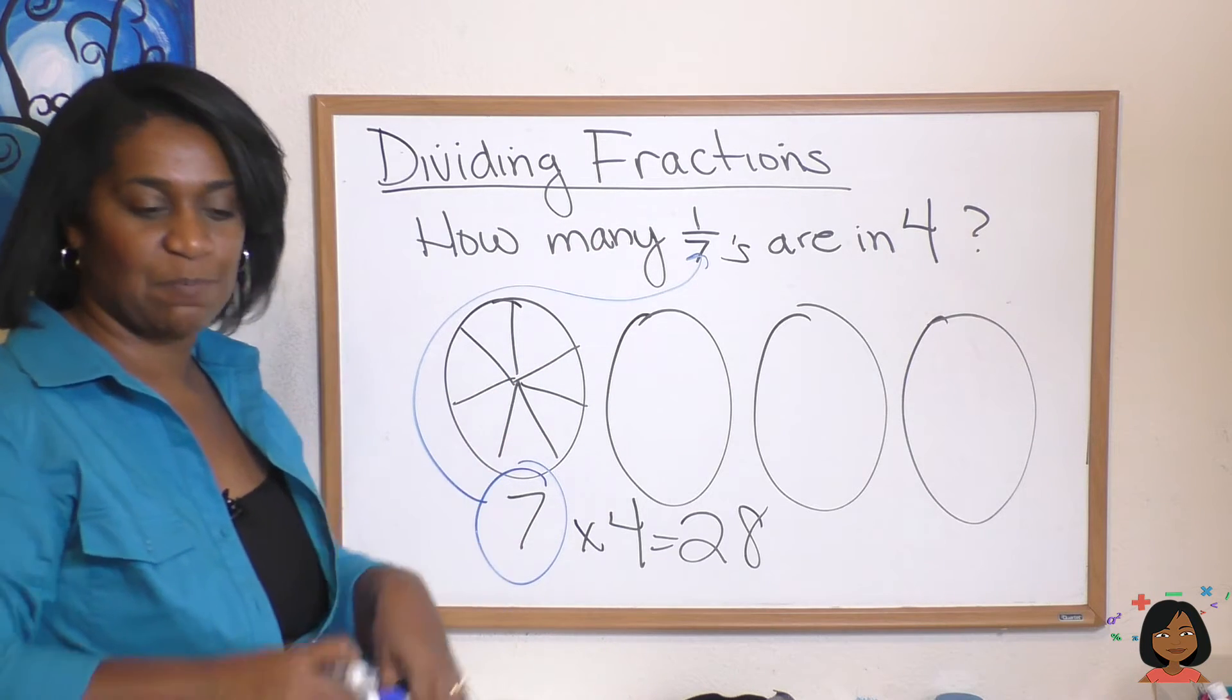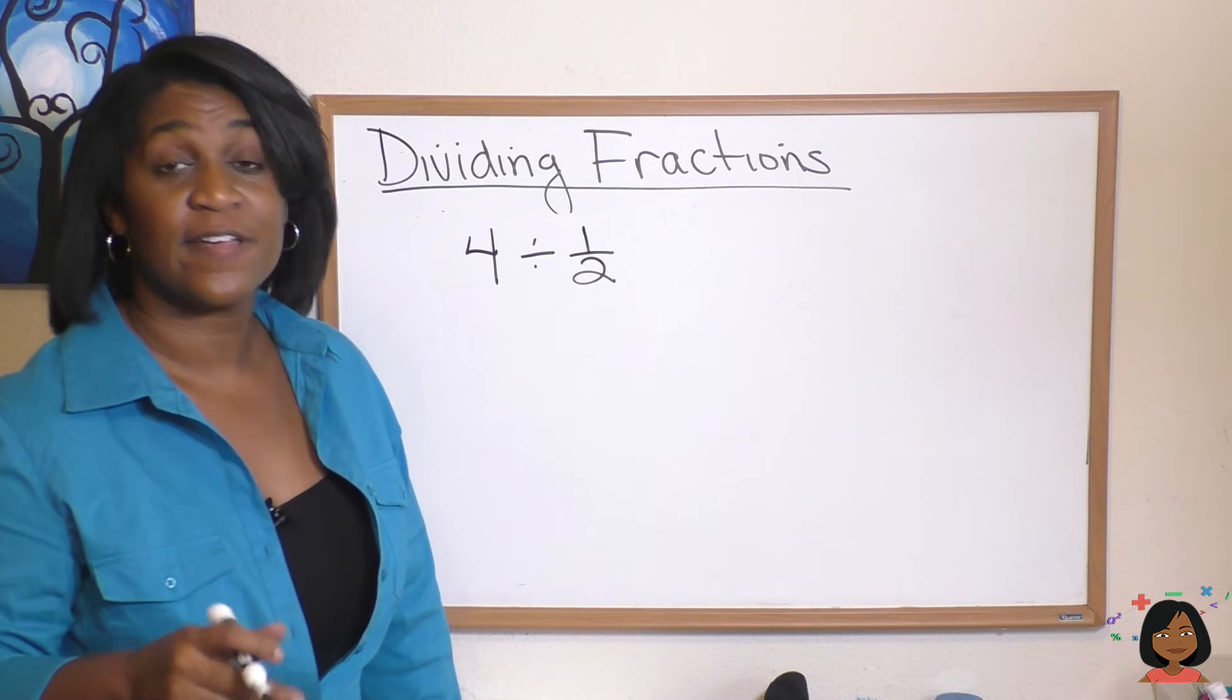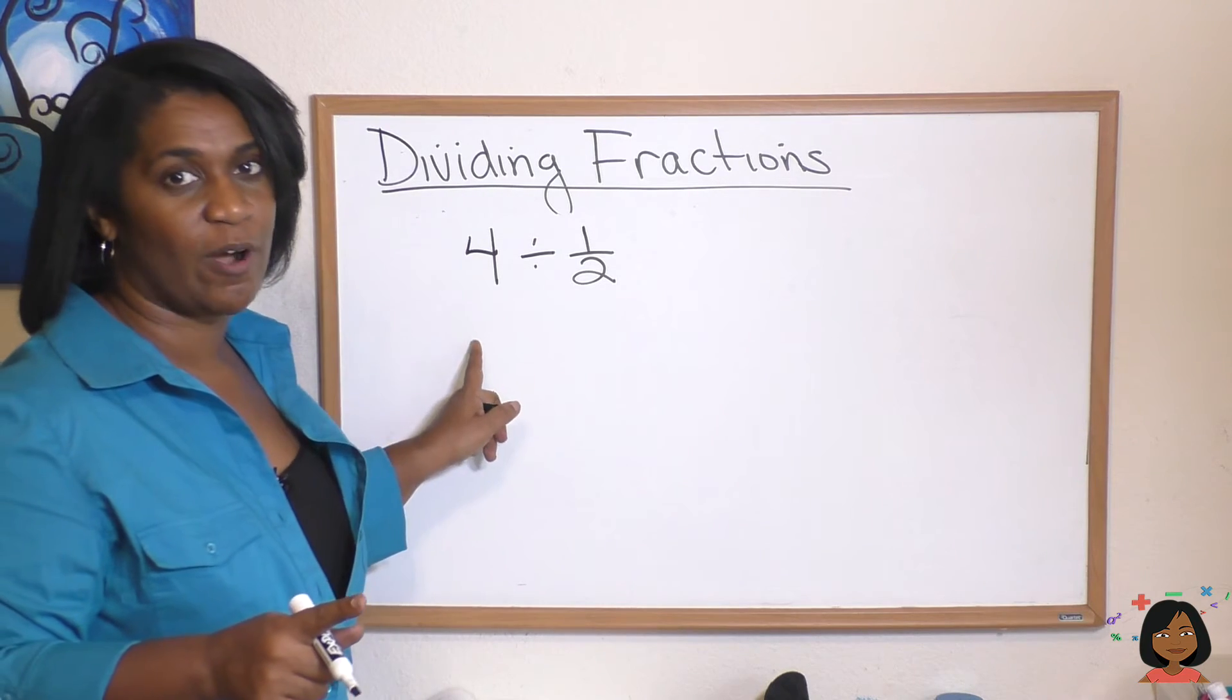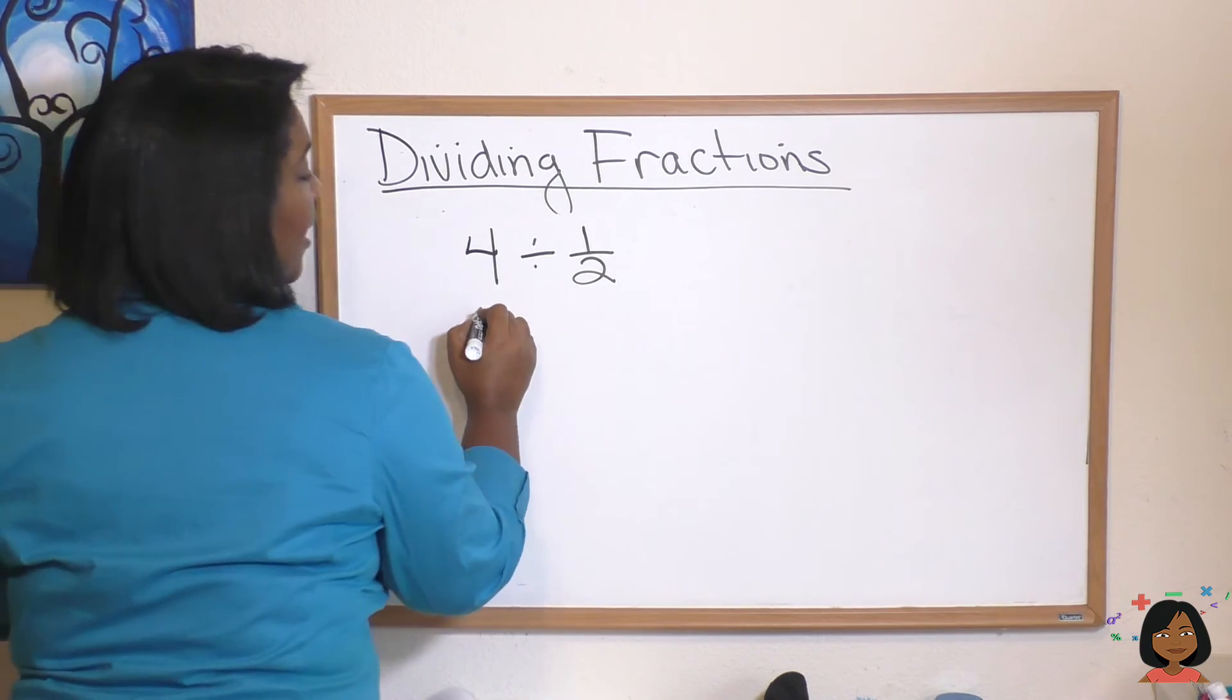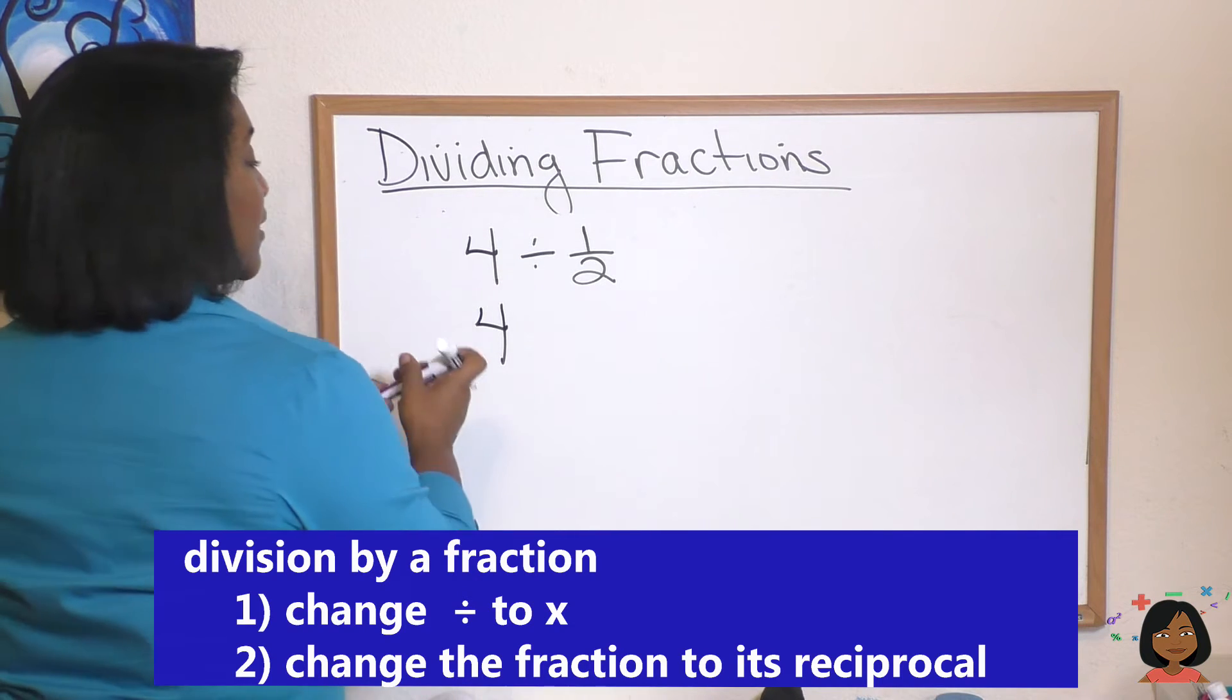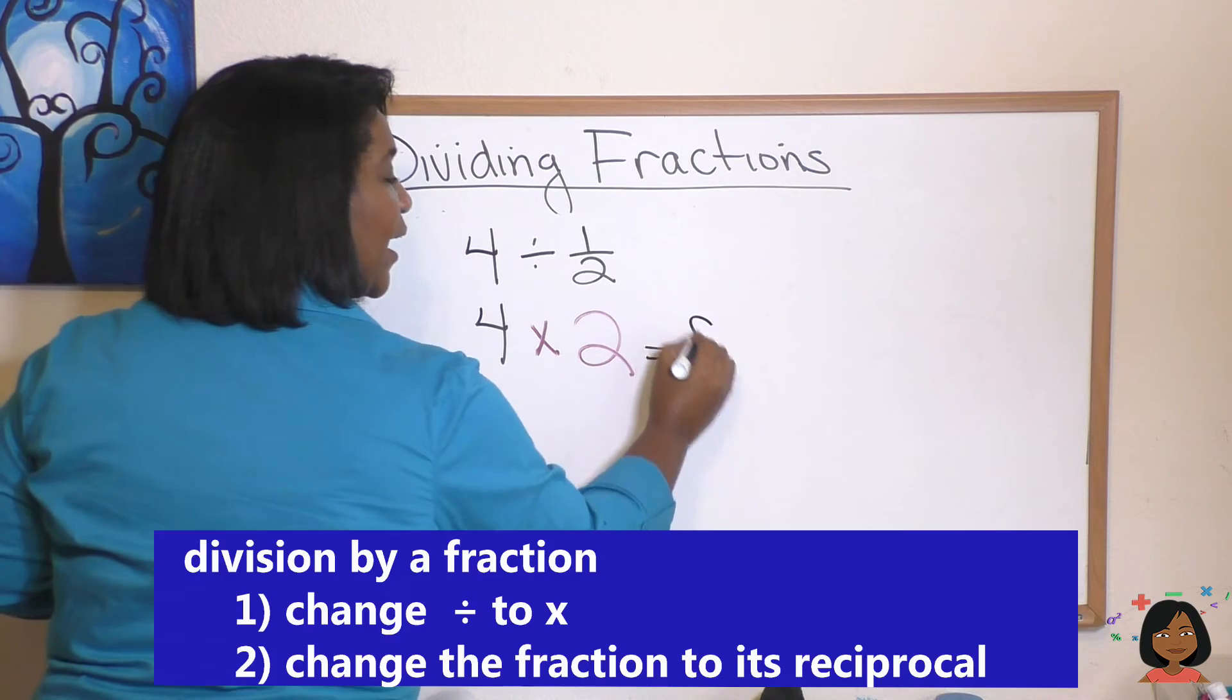Take a look at the next example and it'll all come together. If I said four divided by one-half, it's the same thing as saying how many one-halves are there in four? And we learned that we could use the reciprocal and multiplication. So we could take our four and change our division sign to a multiplication sign and multiply by the reciprocal and we would get eight.